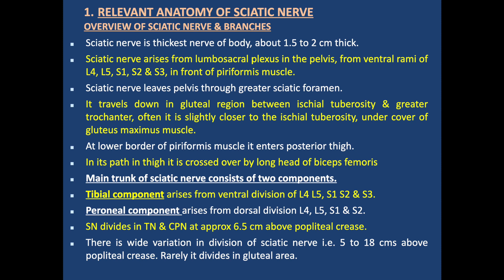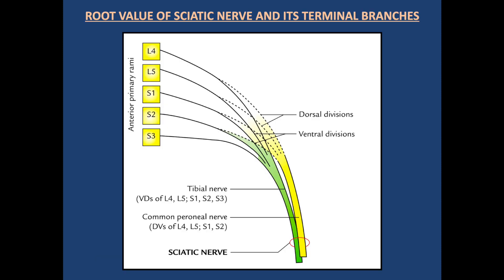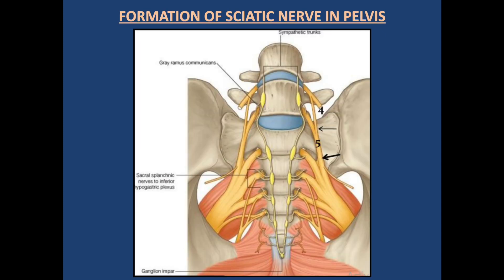The sciatic nerve divides into the tibial nerve and common peroneal nerve at approximately 6.5 cm above the popliteal crease, with a wide variation from 5 cm to 18 cm above the popliteal crease. Rarely, it divides in the gluteal area. This diagram shows the root value of the sciatic nerve and its terminal branches — common peroneal nerve in yellow and the tibial component in green.